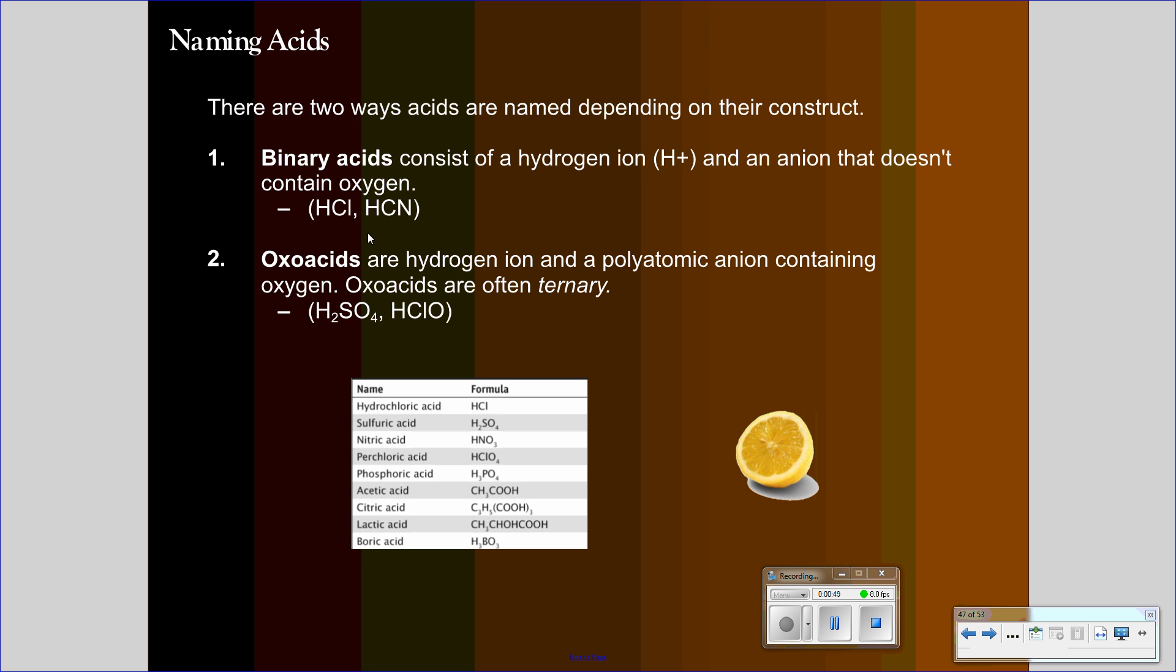The other type of acid is going to be an oxoacid, which are hydrogen ion and a polyatomic anion containing oxygen. Oxoacids are often ternary, which we discussed in the previous video, which means there's three elements present. And that just basically means that hydrogen is bound to a polyatomic ion.